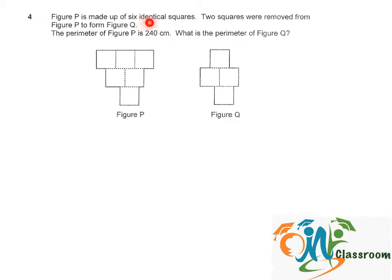Figure P is made up of six identical squares. Two squares were removed from Figure P to form Figure Q. The perimeter of Figure P is 240 cm. What is the perimeter of Figure Q?